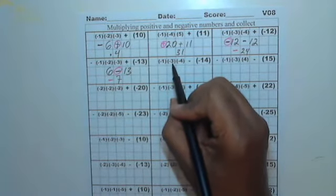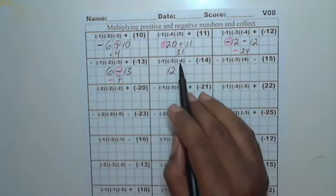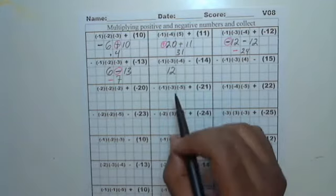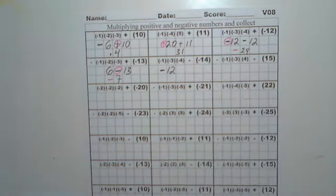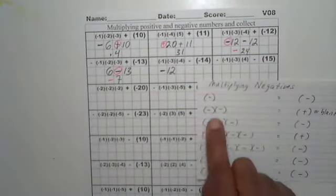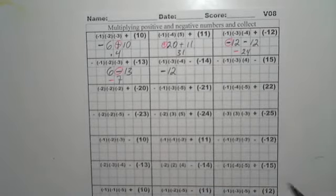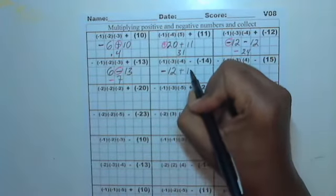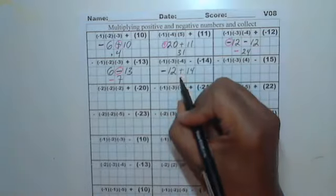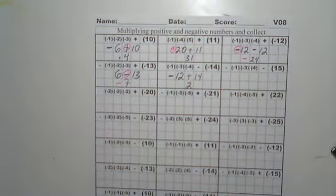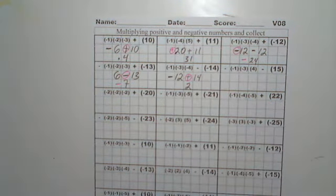Here we have 1 times 3, which is 3, and 3 times 4, which is 12. These are 3 negatives. When you multiply 3 negatives, you will get a negative. Here we have a double negative — 2 negatives — which is going to be a positive, so this will be a positive 14. These are different signs — 12 and 14 — so we're going to subtract those and get a 2. The bigger sign comes from the 14, which is positive, so this will be a positive 2.